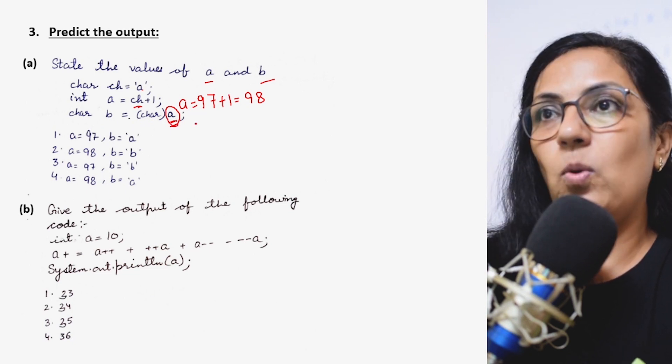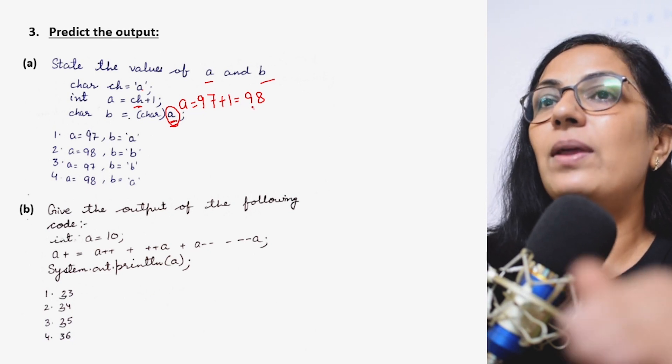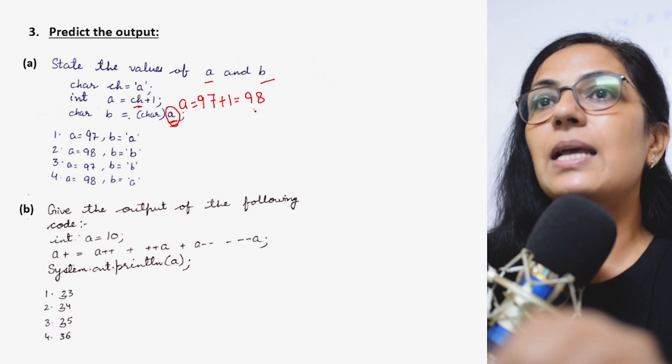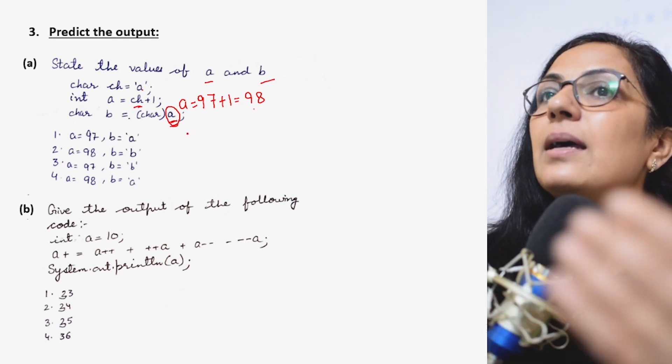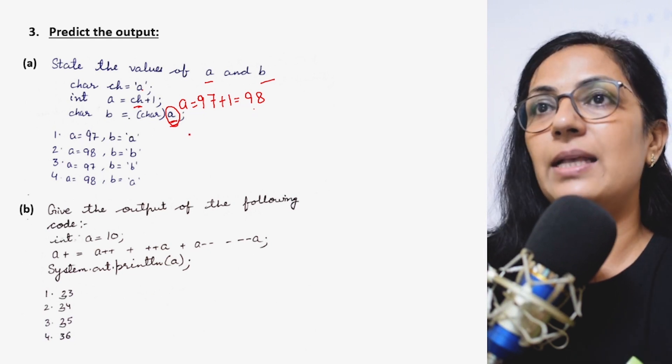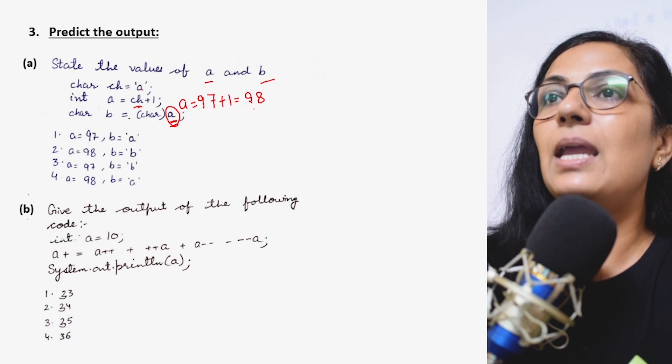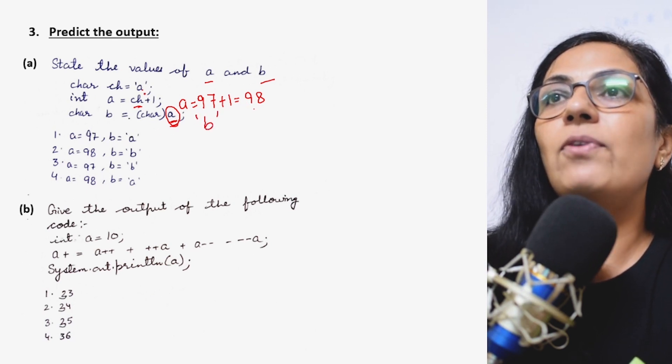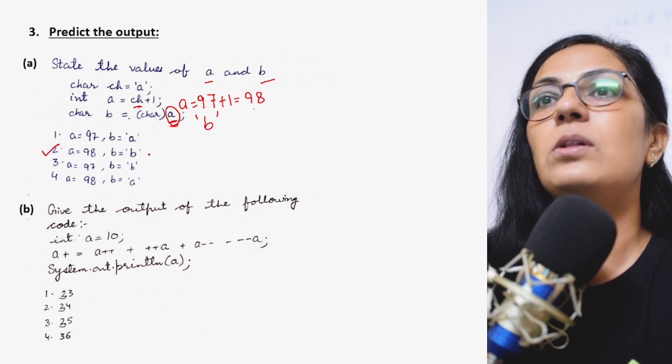Now here char b equals to char of a, this a is the variable, and what is the value of this a is 98. Whenever we store the integer value or the ASCII code in character type, it is taken as the character value of that ASCII code. So char of a is 98, character value is b. So the value of a and b are 98 and b. So option 2 is the correct answer.